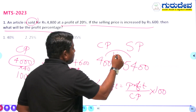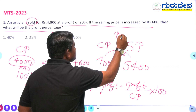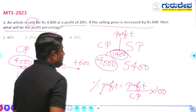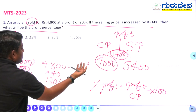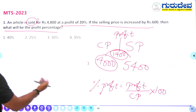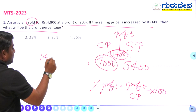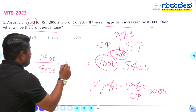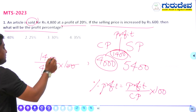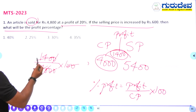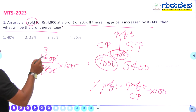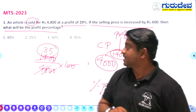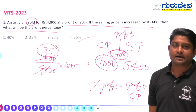The new selling price is ₹5400, so the profit is 5400 minus 4000 = ₹1400. Substituting into the formula: profit percentage = 1400 divided by 4000, into 100, which gives 35 percent. Option number 4 is the right answer.